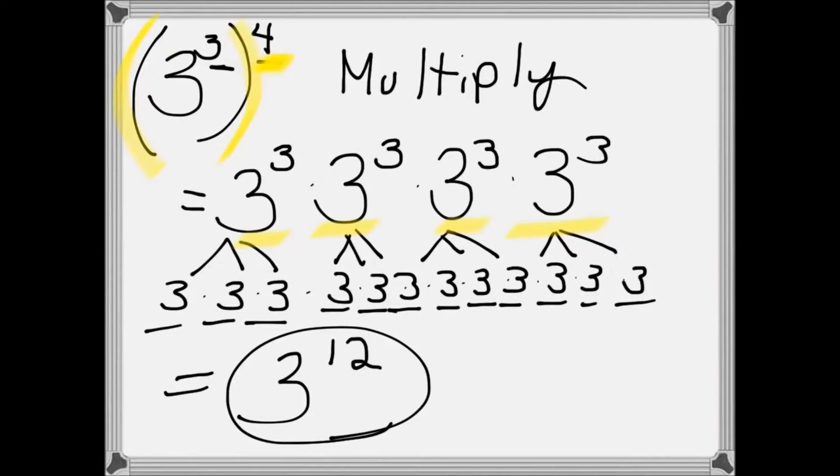Each one of these means that you have 3 multiplied 3 times. Which is why we have 3 times 3 times 3 here, followed by another set of 3 times 3 times 3, another set of 3 times 3 times 3, followed by another set of 3 times 3 times 3.